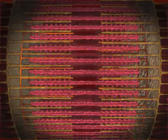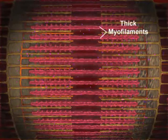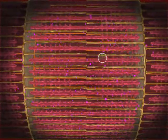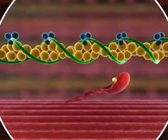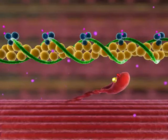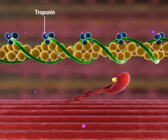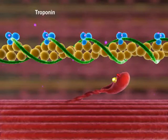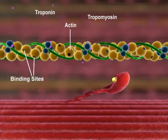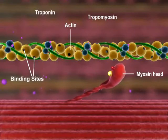A sarcomere shortens when myosin heads in thick myofilaments form crossbridges with actin molecules in thin myofilaments. The formation of a crossbridge is initiated when calcium ions, released from the sarcoplasmic reticulum, bind to troponin. This binding causes troponin to change shape, and tropomyosin moves away from the myosin binding sites on actin, allowing the myosin head to bind actin and form a crossbridge.